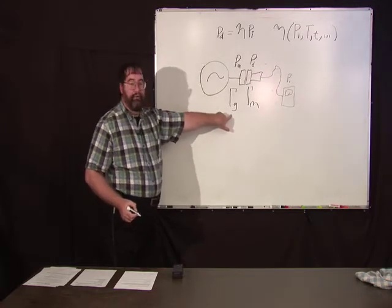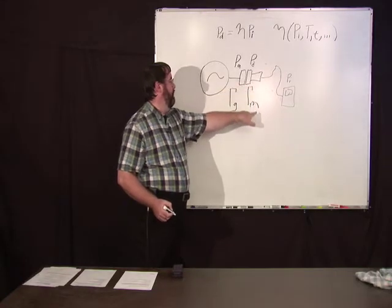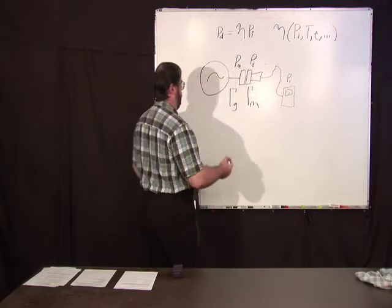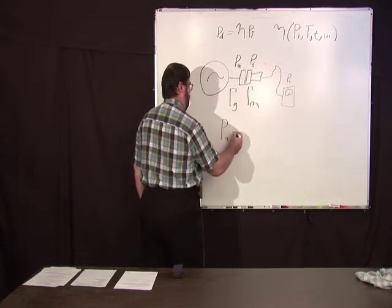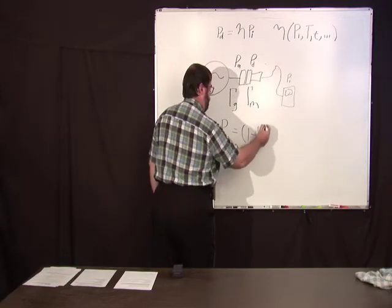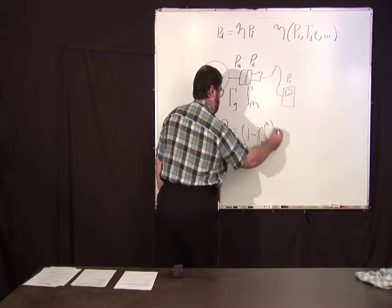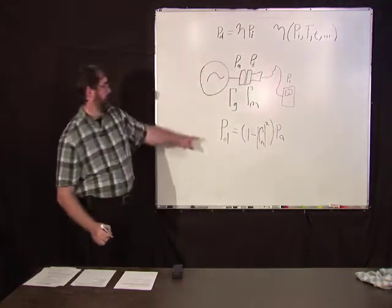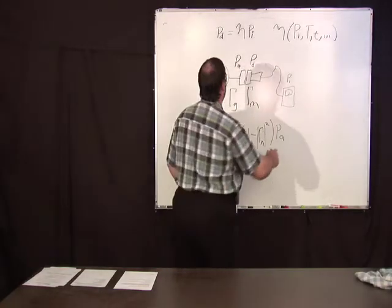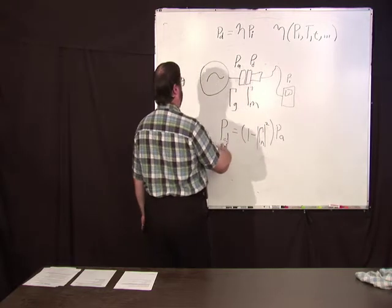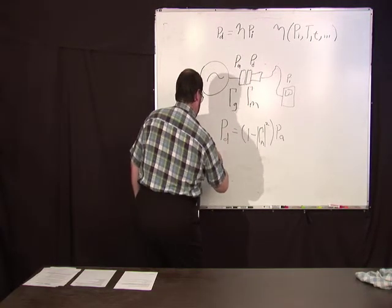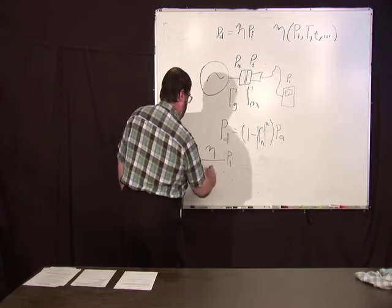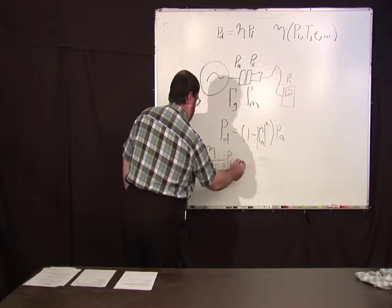Now, we don't typically want to measure the delivered power, what we're really interested in is what's called the available power. And that's the power that would be delivered to a matched load when connected to this port. That's not going to be the same as the delivered power. Now if gamma g was zero, the only reflection was from the sensor, then the delivered power is going to be one minus gamma meter squared times the available power.